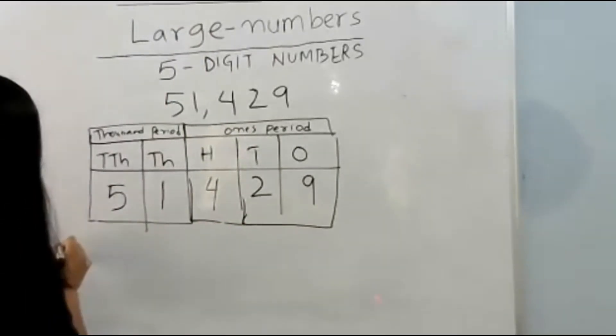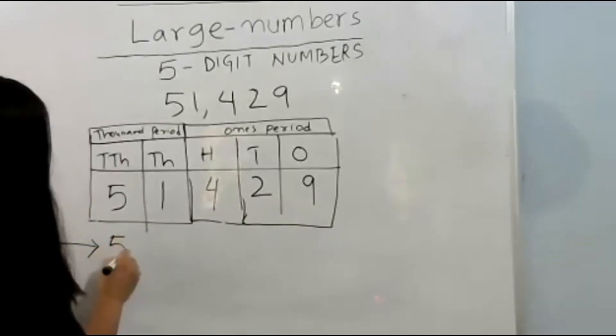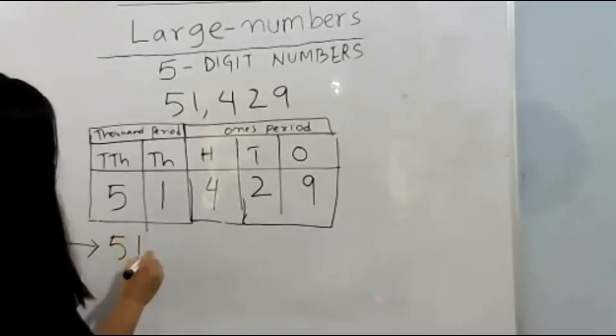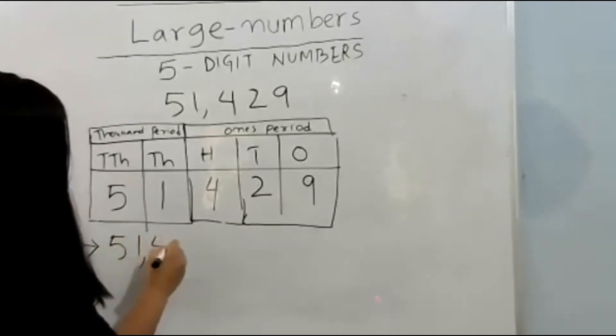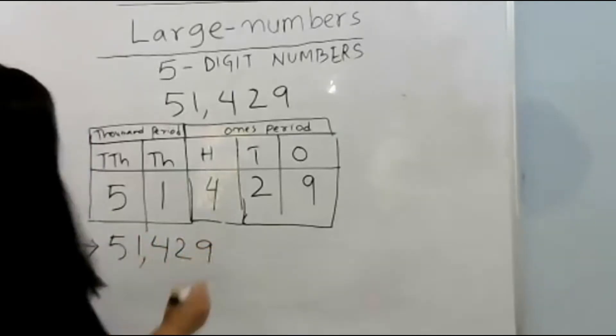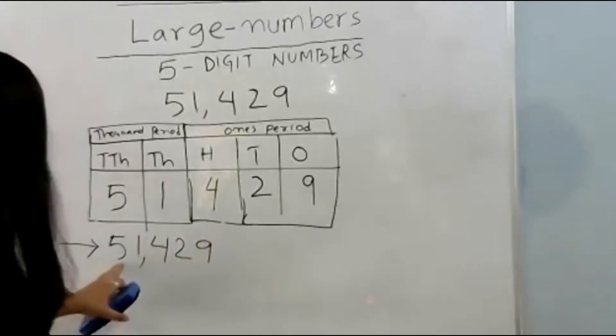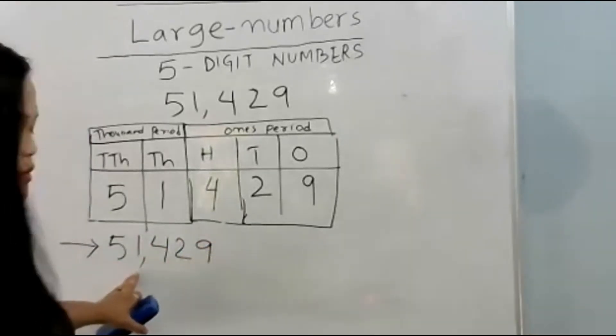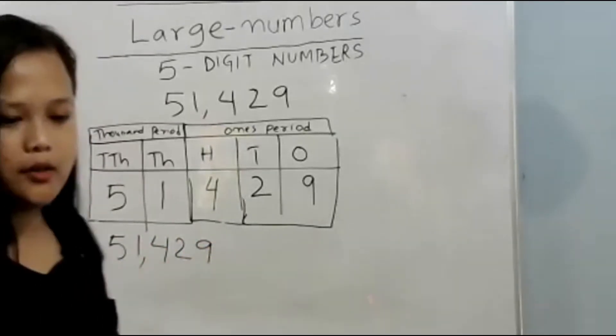In the standard form, it is written as 51,429. The number name is fifty-one thousand four hundred twenty-nine.